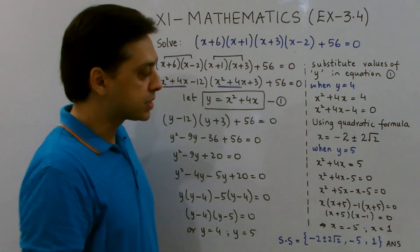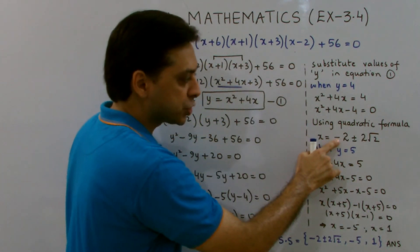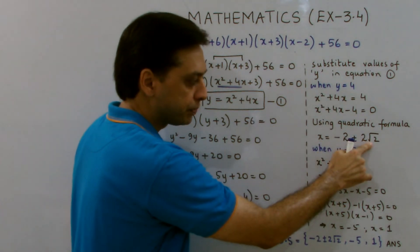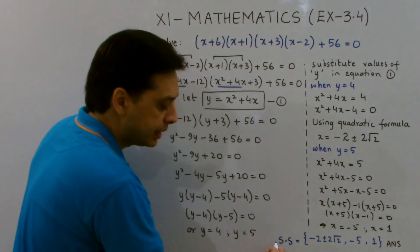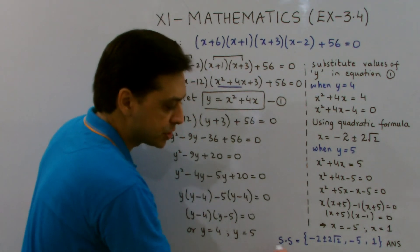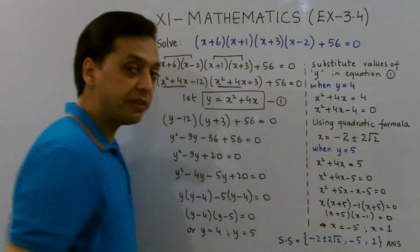Now, finally, I have got four answers. Two of the answers are minus 2 plus minus 2 root 2 and minus 2 minus 2 square root 2, and two of them are minus 5 and 1, which can be written in solution set form. And that's my final answer.